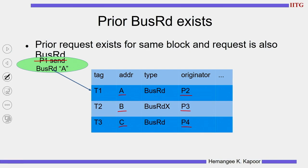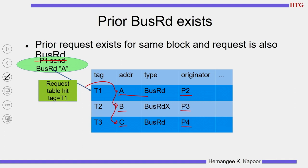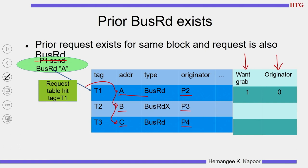When processor P1 sends a bus read on block A, we compare all addresses in the request table and check whether A exists. If A is there, we check the request type — in this case it is bus read. We get a hit in the request table with request type bus read, meaning P2 wants to read block A and P1 also wants to read block A. Both can get the data block whenever the response happens, so we queue up in entry T1.